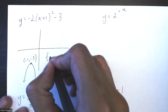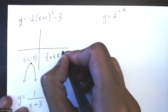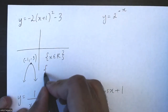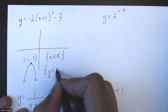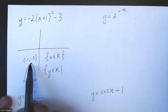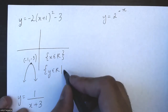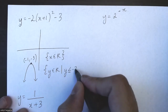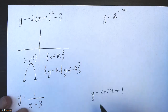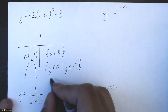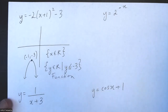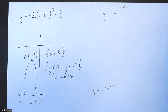So my domain is just all real numbers — that's pretty much true for all quadratic functions. For my range, I know that my maximum value is -3, so my range is y ≤ -3. All quadratic relations are functions, so this one is a function as well, and as you can see from the graph it passes the vertical line test.